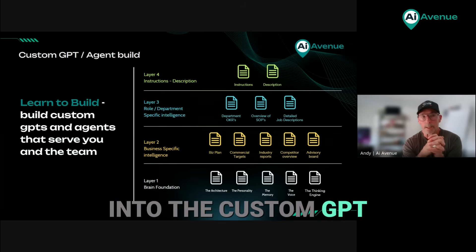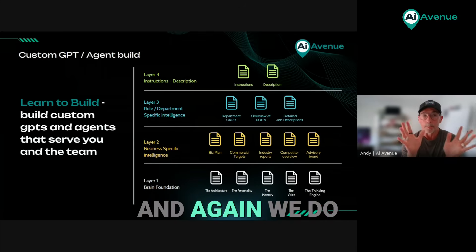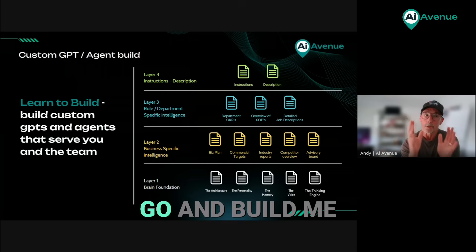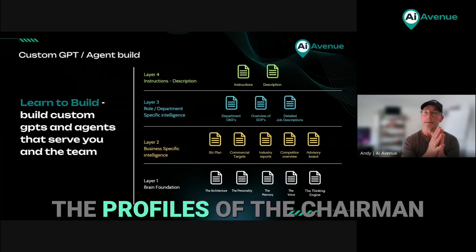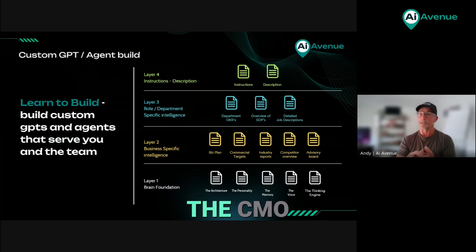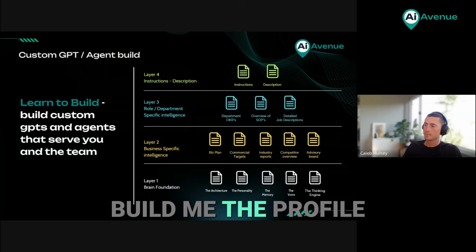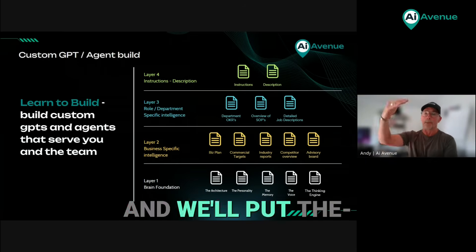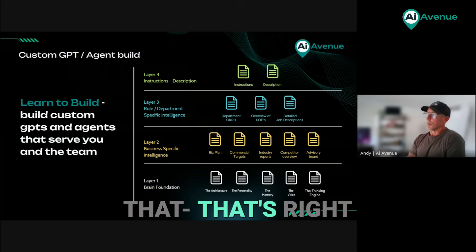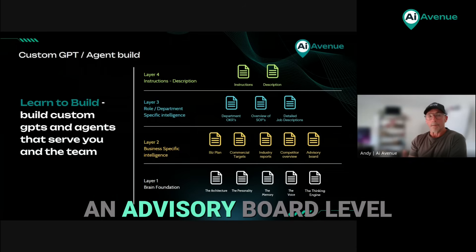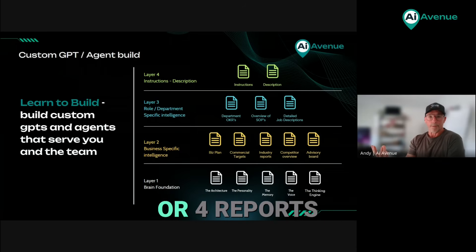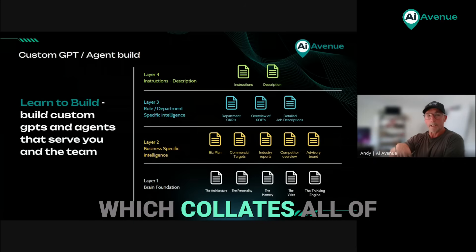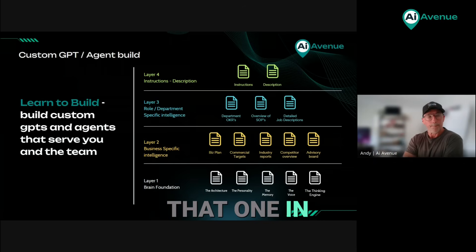The advisory board is the last one on this level, and again we do a similar thing — this is extraordinary. You can build a virtual board in your business: build me the profiles of the Chairman, the CTO, the CFO, the CMO, whatever it is. There will be a detailed profile of these people with 25 years of experience in your industry, with the guardrails. You build this intelligence at an advisory board level, get three or four reports, synthesize them into one board document that collates all of them together, and bake that one in.